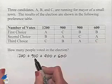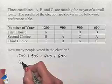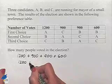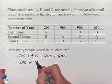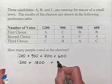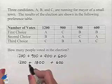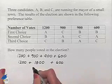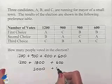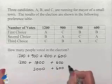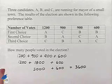Adding together, we have 1,200, plus — combining the middle terms — 1,800, plus 600. The first two combine to give us 3,000, plus 600, to give us our total of 3,600 votes.